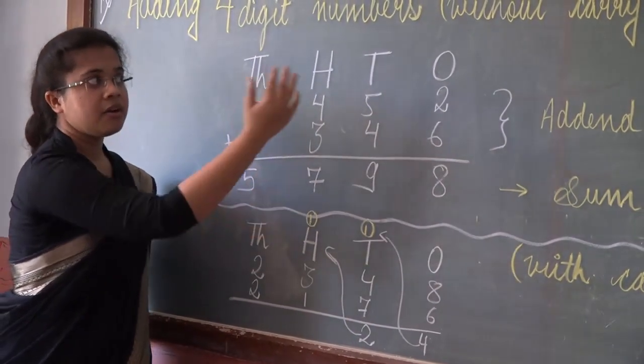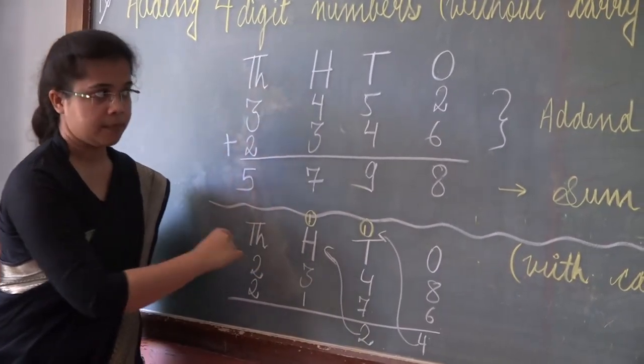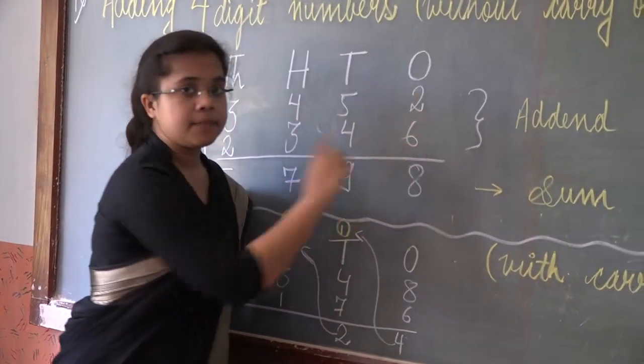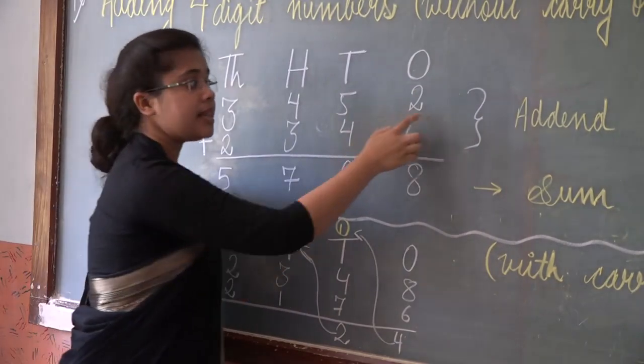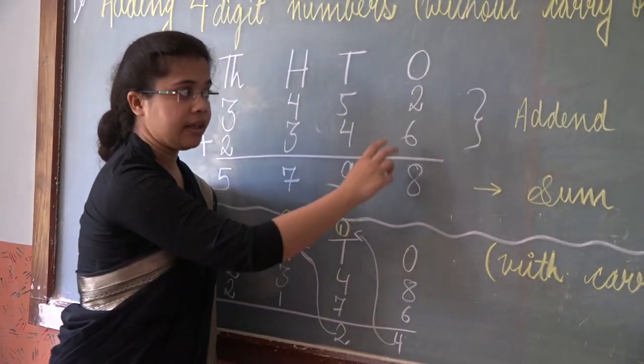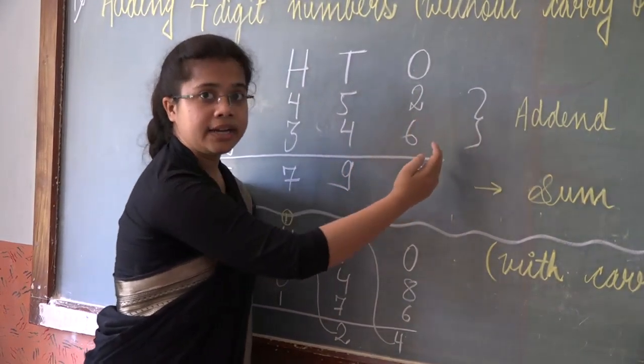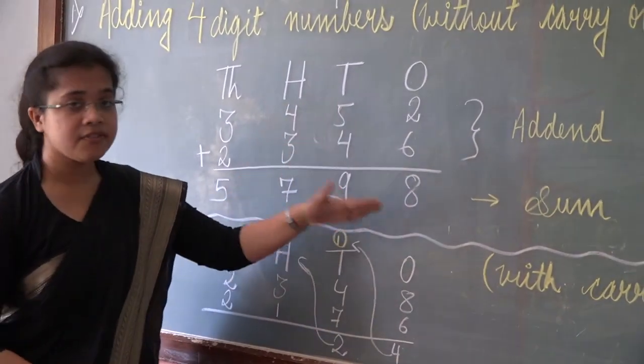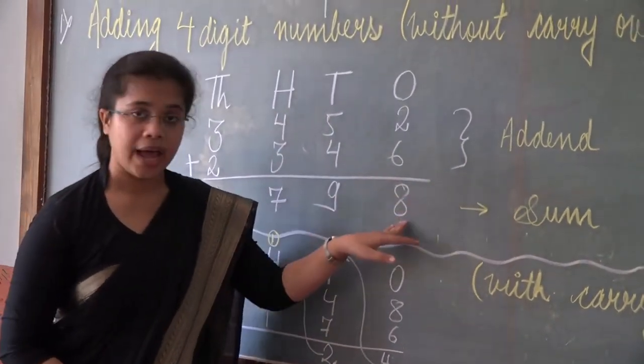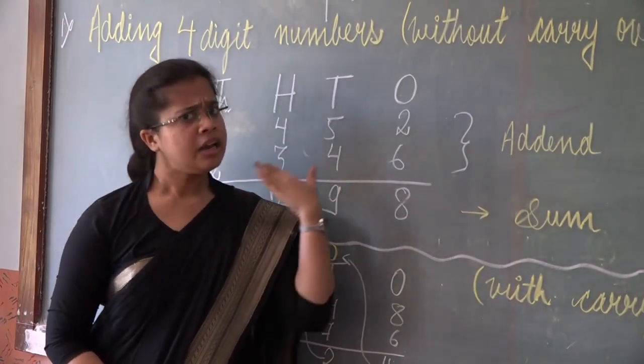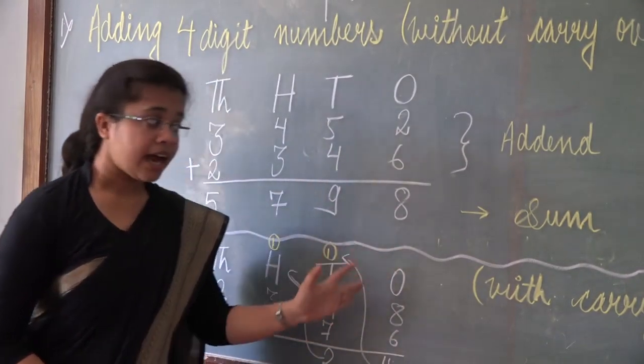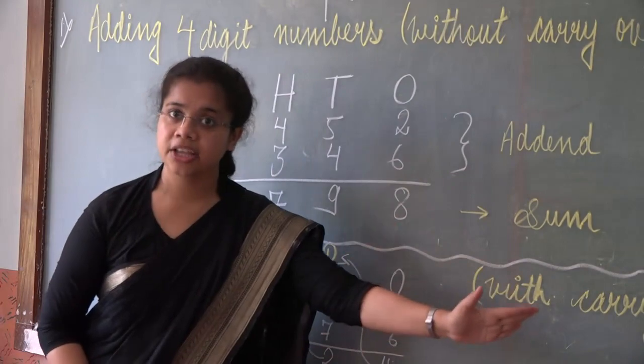In this one we haven't carried anything. These two numbers, the numbers that we are adding, they are known as addend. And the result that we get after addition, that is known as sum. Now let us learn about addition with carry over.